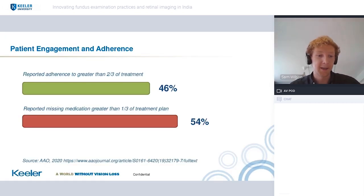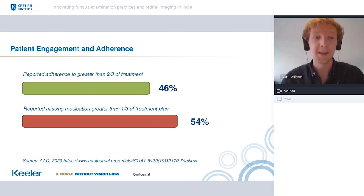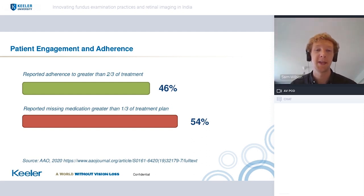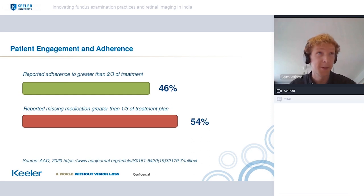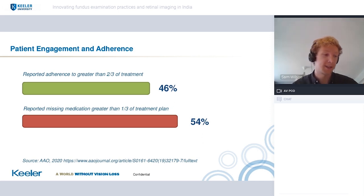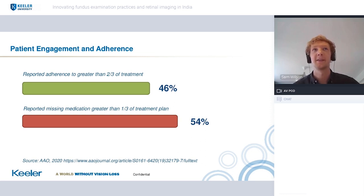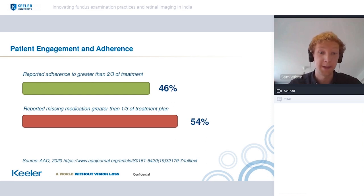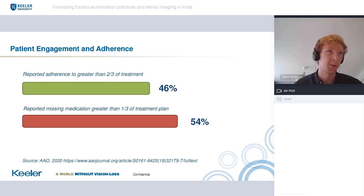A second big trend we're seeing across the medical field is the age-old problem of how to ensure patients remain engaged and actually adhere to their treatment plans. This figure from the American Academy of Ophthalmology, published just over a month ago, is really interesting — the key result was that over half of patients aren't taking over a third of their administered medicine or attending treatment plan appointments. This is obviously a huge problem in how we make sure we can provide adequate ophthalmic care to those patients.